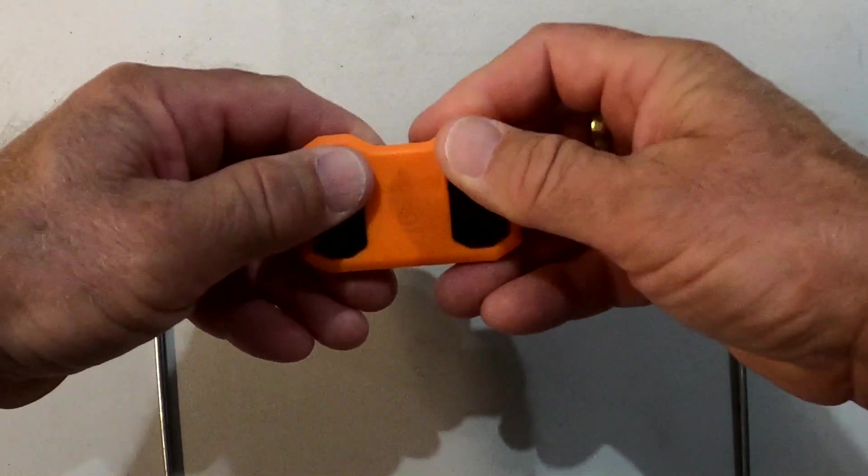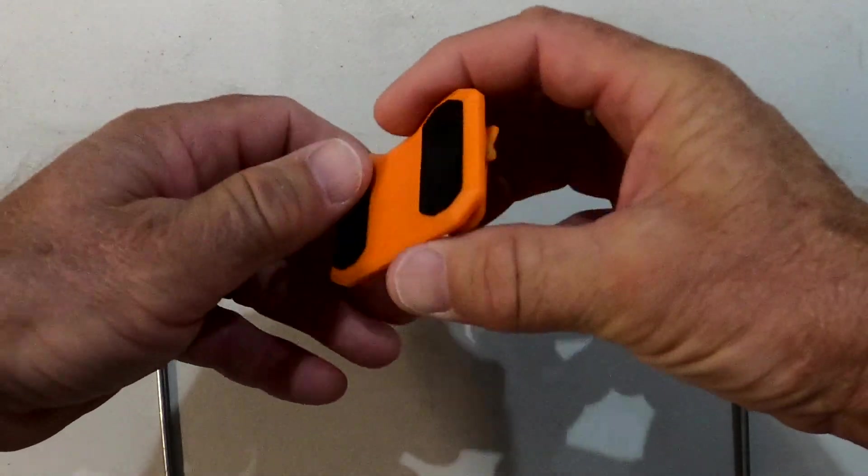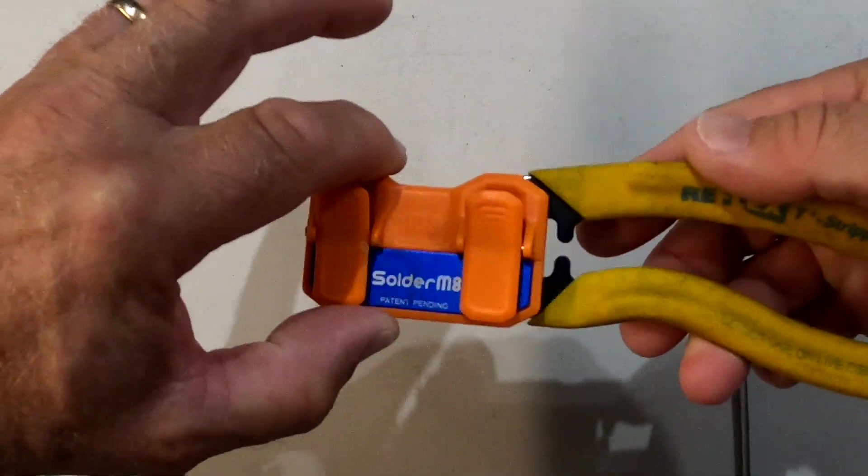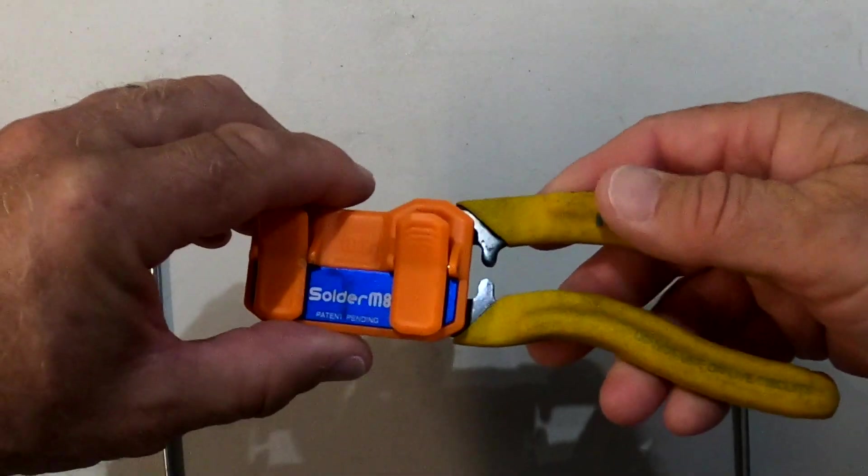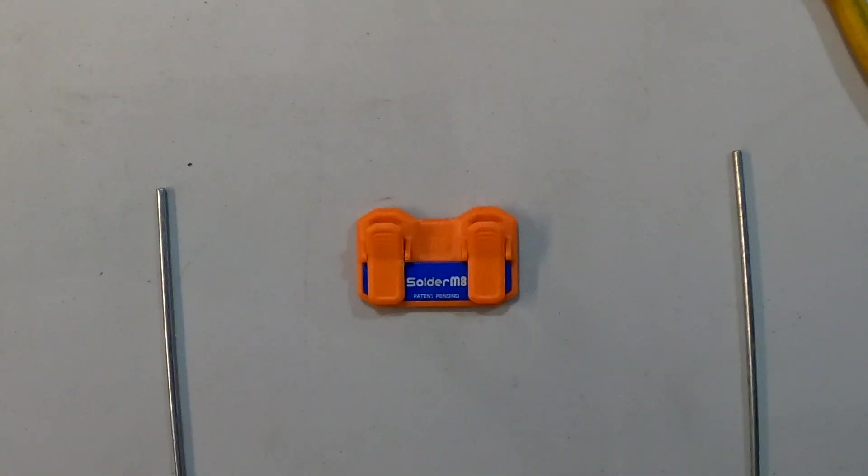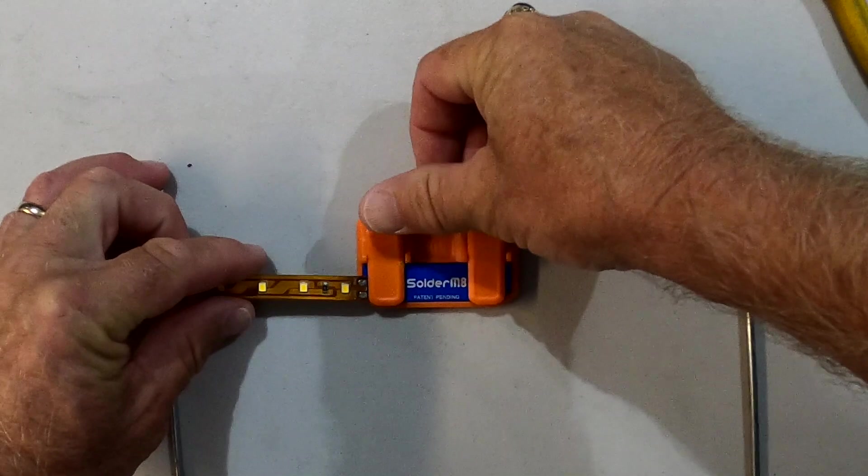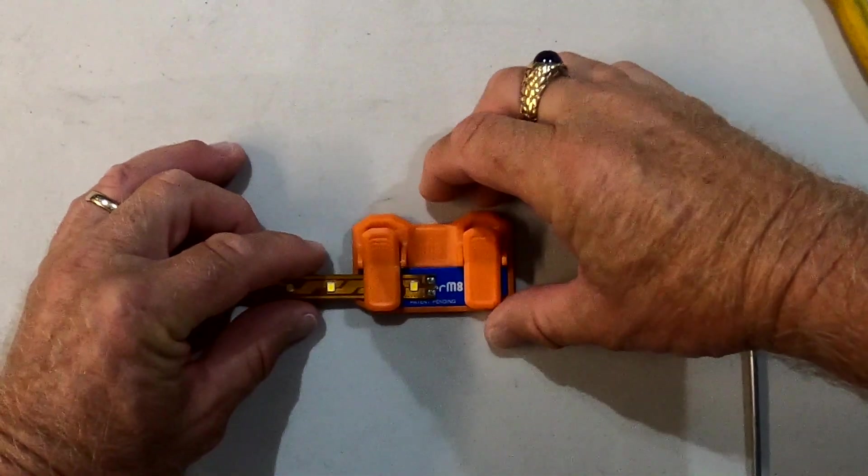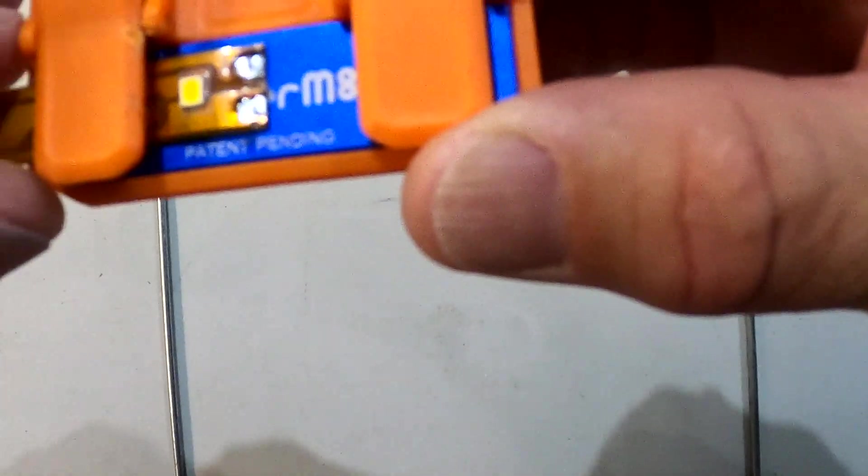It's got nano feet technology, which are soft rubber feet that'll grip any surface, and it's magnetic as well. You can see it'll stick to any metal surface to hold it steady while you work. To prep for your solder job, here is the end of the LED tape.